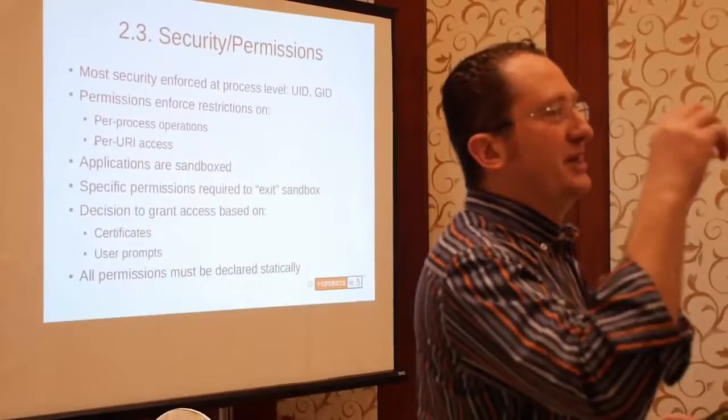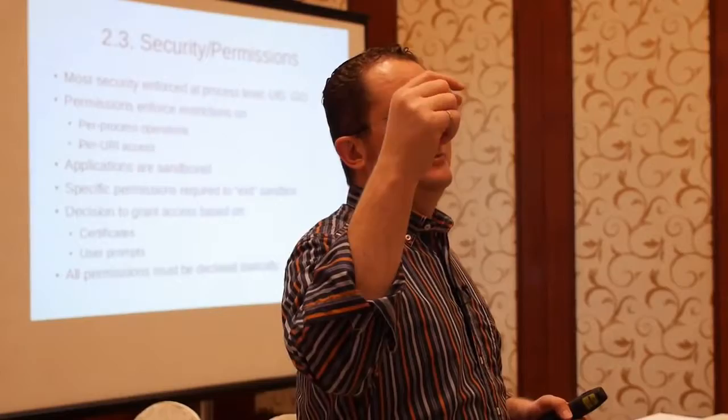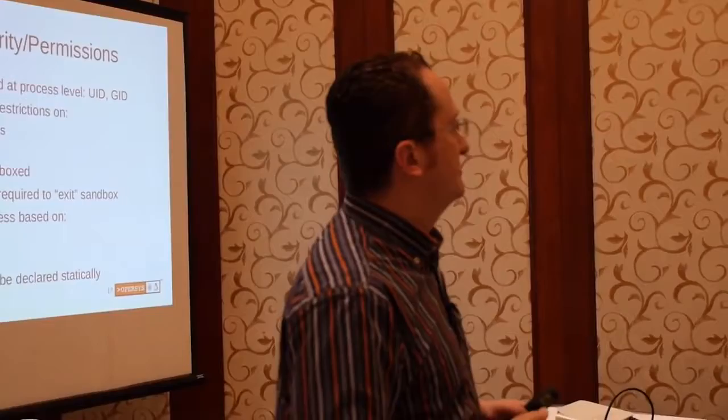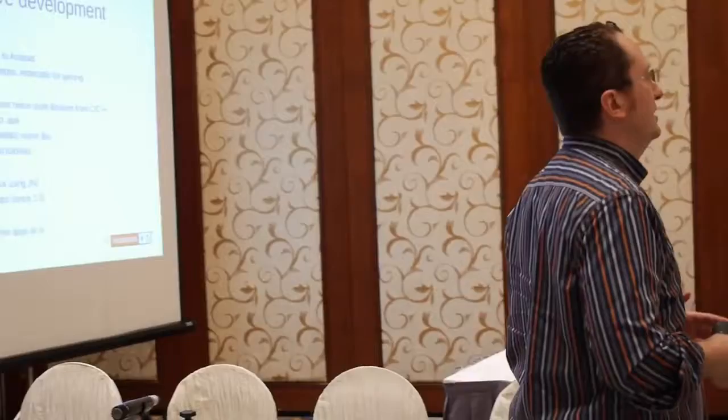One crucial thing: the entire security model in Android is based on user IDs and group IDs. This is really fundamental — this is why applications can't actually talk to hardware. Hardware is accessed through /dev entries. These are nodes in the file system with different permissions, and those nodes end up belonging to processes which are privileged. For apps to get access to the hardware, they have to talk to those privileged processes. I'll show you what that means at an architectural level in a few slides.